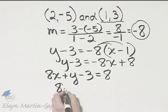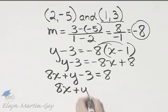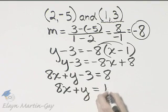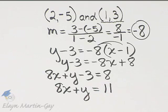And then I will add 3 to both sides. If I add 3 to the left side, I'll have 8x plus y and the 3's will add out. Don't forget to add 3 to this side. 8 plus 3 is 11. This is in standard form.